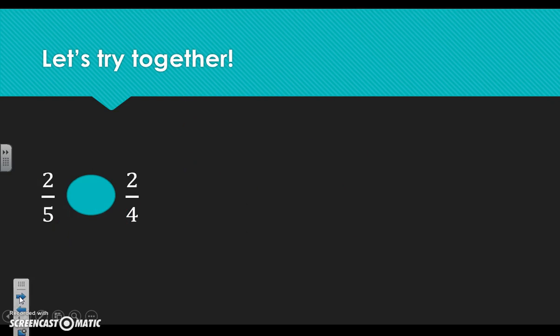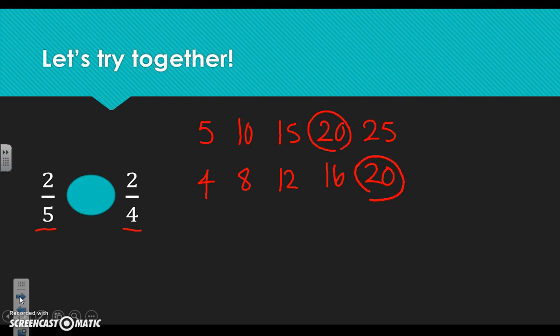We now have the same denominator — twelve and twelve. Two or nine: nine is a bigger number, so three fourths is greater than one sixth, or nine twelfths is greater than two twelfths. Let's try one last one together before you try them on your own. The denominators are not the same, so we need to find a common denominator. Let's list multiples of five: five, ten, fifteen, twenty, twenty-five. Now multiples of four: four, eight, twelve, sixteen, twenty. I see twenty for both of them.